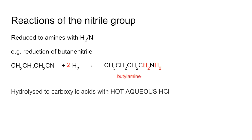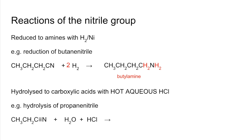The second reaction is hydrolysis of the nitrile group to a carboxylic acid group, using hot aqueous HCl. Hydrolysis means chemical breakdown by reaction with water. Hydrolyzing propanenitrile — the triple bond between carbon and nitrogen breaks — gives propanoic acid. Ammonium chloride is also produced, and the equation requires two moles of water to balance.